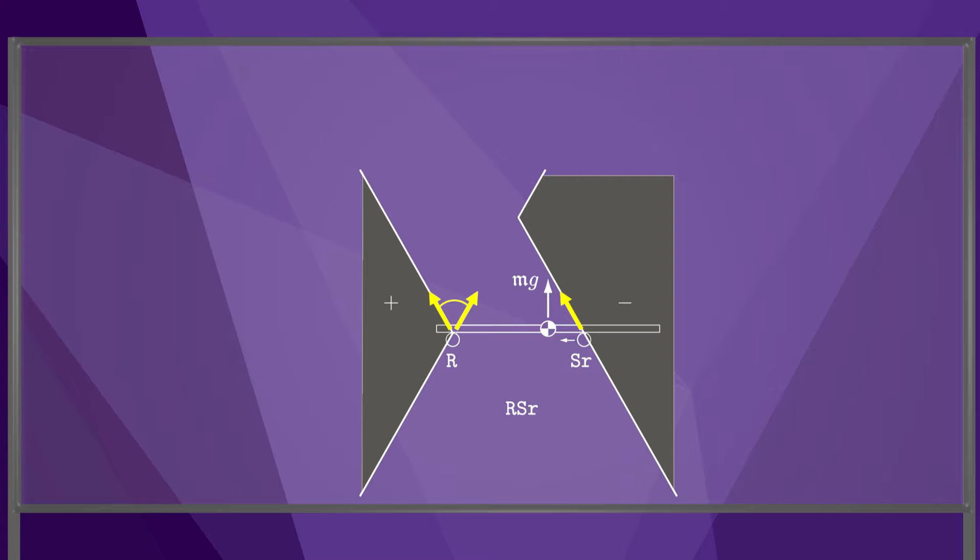The wrenches that can be generated by the contacts are indicated by the moment labels. Since the upward force mg passes through the region labeled minus, the fingers cannot balance gravity, and this contact mode is not possible.